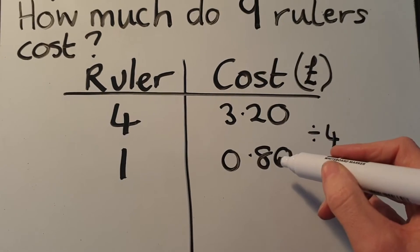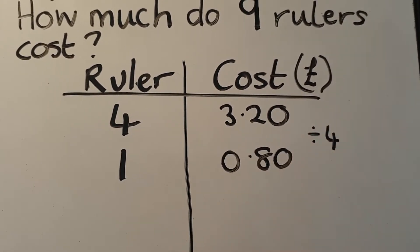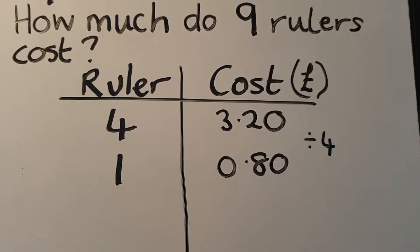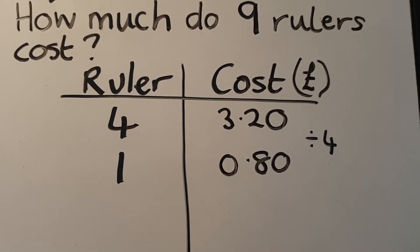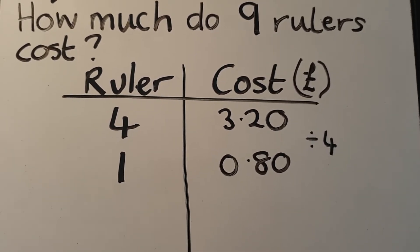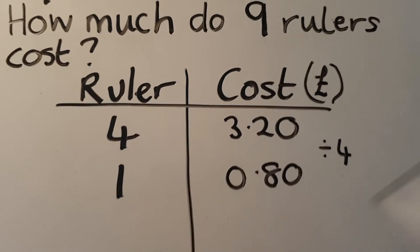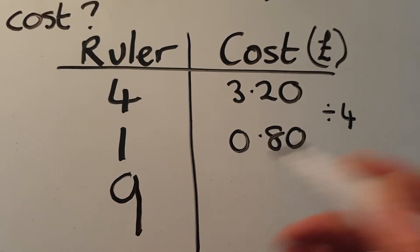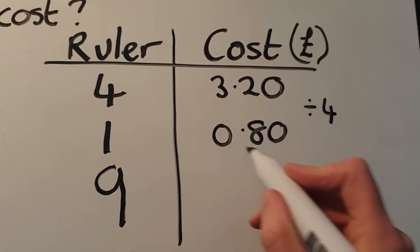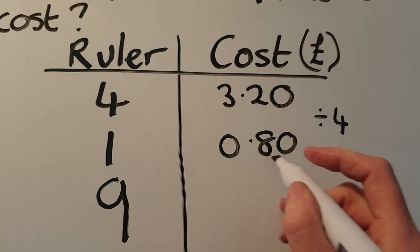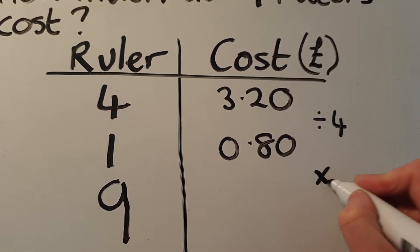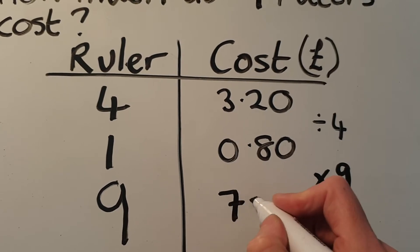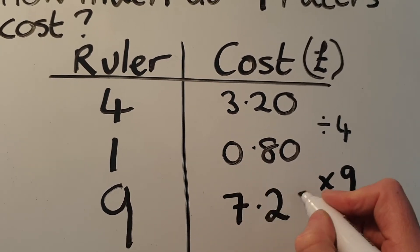That gives us zero point eighty pounds, which is obviously eighty pence, but I'm going to leave it as a decimal because when I multiply it back up it'll be into the pounds again. So to find nine rulers, I'm going to put a nine in the left-hand column and multiply zero point eighty by nine to get our answer, which is seven pounds twenty.